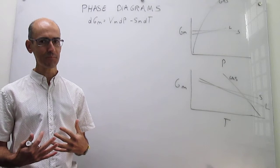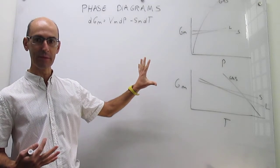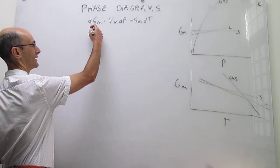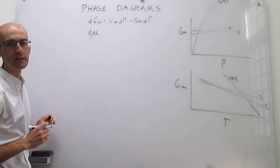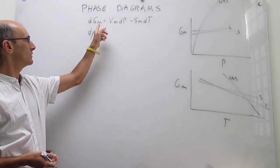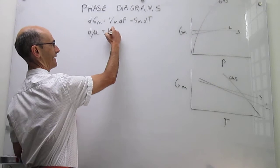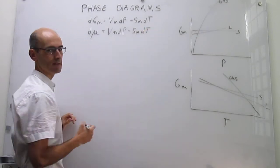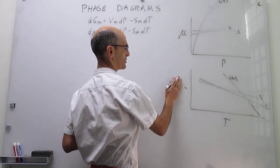Before we move forward, I want to reiterate the importance of the molar Gibbs energy — it is the thermodynamic variable that controls phase stability. It is so important that in chemistry we tend to redefine it and call it the chemical potential instead of the molar Gibbs energy. These two terms are used interchangeably and are exactly the same thing. This will become even more important when we begin to study mixtures, so we can rewrite this as simply the chemical potential of a substance.